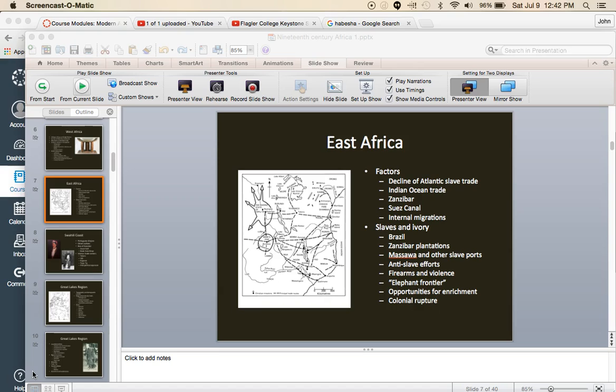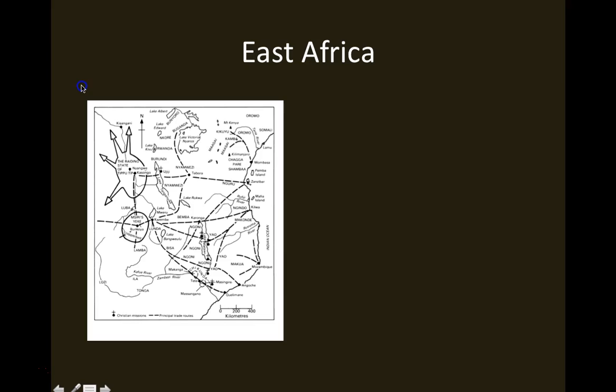This lecture is part of the History 363 Modern Africa class at Flagler College. I'm Dr. John Young, the instructor. I want to follow up the last lecture where we introduced the concept of legitimate commerce and talked about the end of the transatlantic slave trade by turning to a different region of Africa.